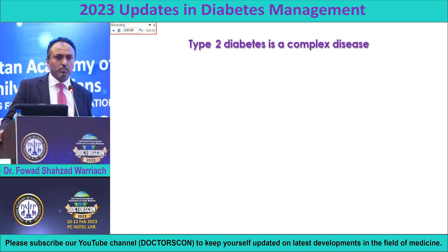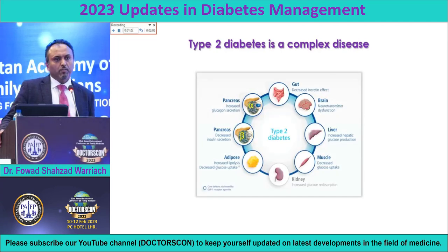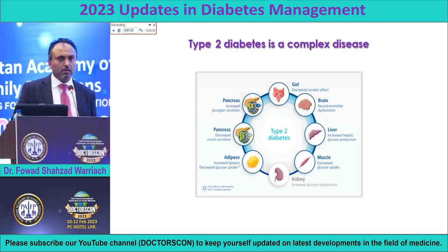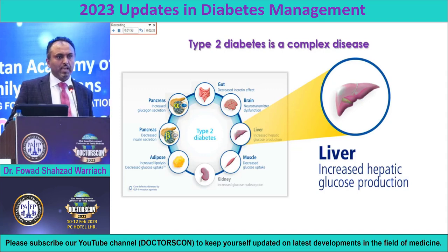We all know that insulin is good when we need it, but still there are grey areas I will try to highlight. How does diabetes basically affect? It is the disease of multi-organs. Nothing works properly when somebody is having diabetes. The brain will not work properly because neurotransmitter will have dysfunction. The kidneys will start reabsorbing more and muscle will stop taking sugar from the blood. The body is singing the same song: there is hyperglycemia, every organ will reflect that.